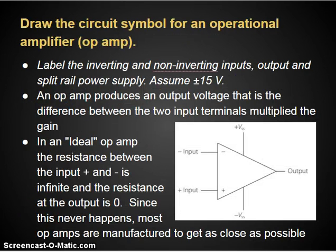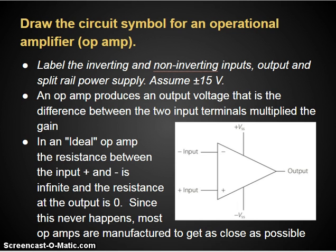You need to be able to draw a symbol for an operational amplifier. There are inverting and non-inverting inputs. You'll have a power supply — in this case, a 15-volt power supply, positive and negative. On the left side of the symbol, you have your inverting and non-inverting inputs; on the top and bottom, your power supply; and on the right side, your output line. In an ideal op-amp, the resistance between the positive and negative inputs is infinite, and the resistance at the output is zero. However, this never happens due to constraints of physical materials, so they're manufactured to get as close as possible.